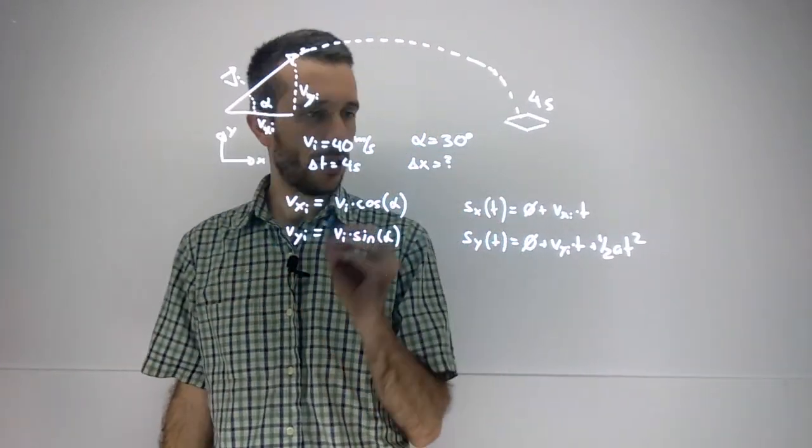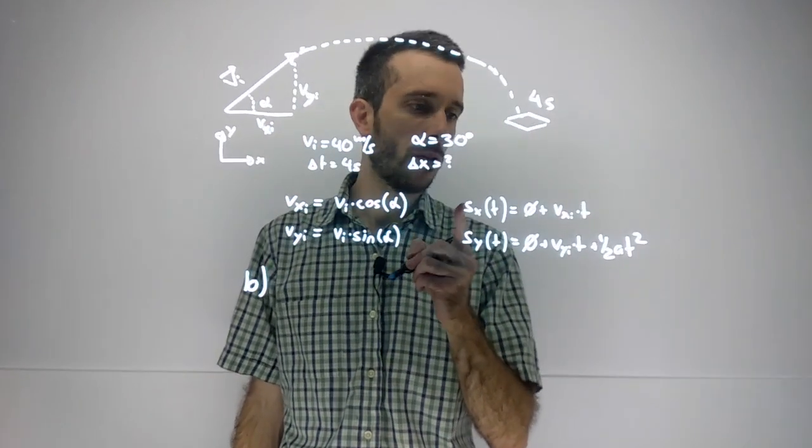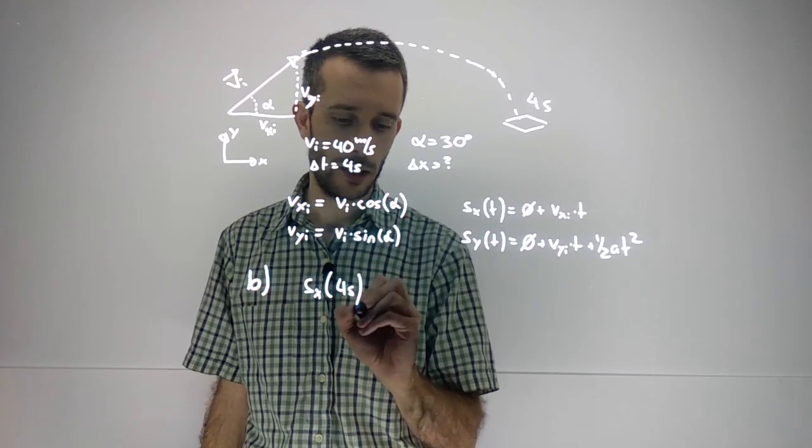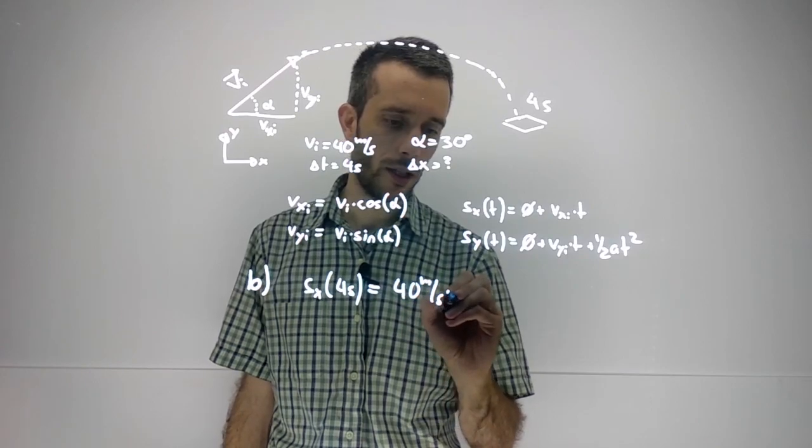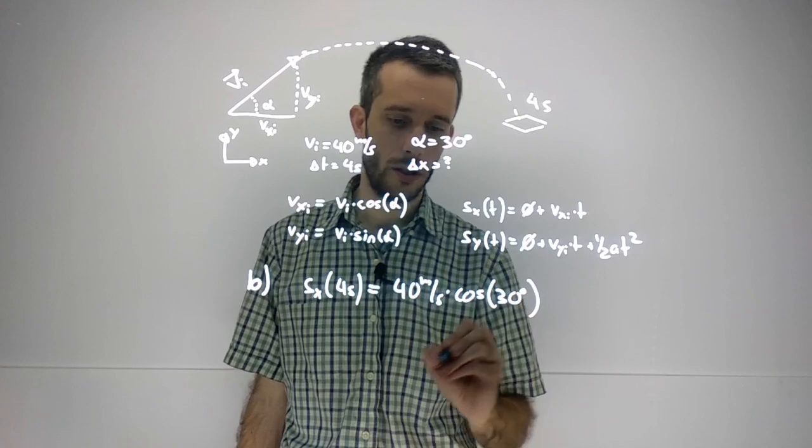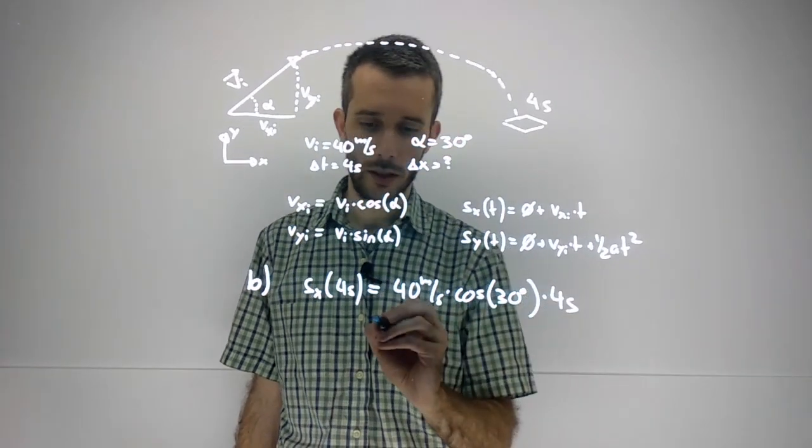Now that we know that alpha is 30 degrees, part b is quite simple. We simply plug it into the equation here. So we have s as a function of time at 4 seconds will be my v initial x, so 40 meters per second times cosine of 30 degrees, times the time which is 4 seconds.